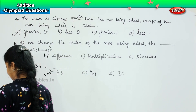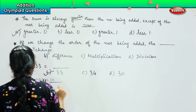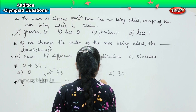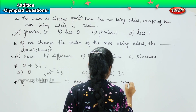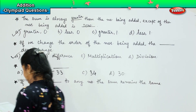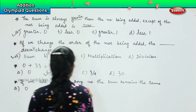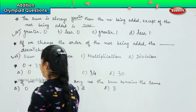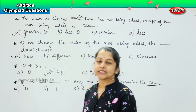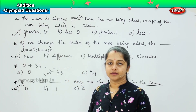Here is your next question: If we add blank to any number, the sum remains the same. Options are: Option A — 0; Option B — 1; Option C — 2; Option D — 3. What do I add so that the question and the answer stay the same? Very good — it is Option A, 0.